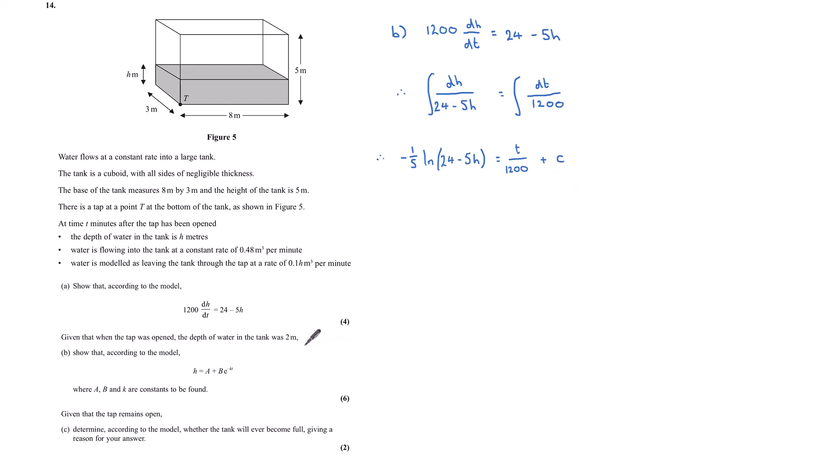I'm given a boundary condition here on this line. Given when the tap was opened, so that's at the time t is 0, the depth of the water is 2. I've got a boundary condition here, which I can use to find c. Substituting h is 2 into here and t is 0 gives me 24 minus 10. So that's negative 1 fifth ln 14, which is equal to t is 0. So it's just c on the right hand side.